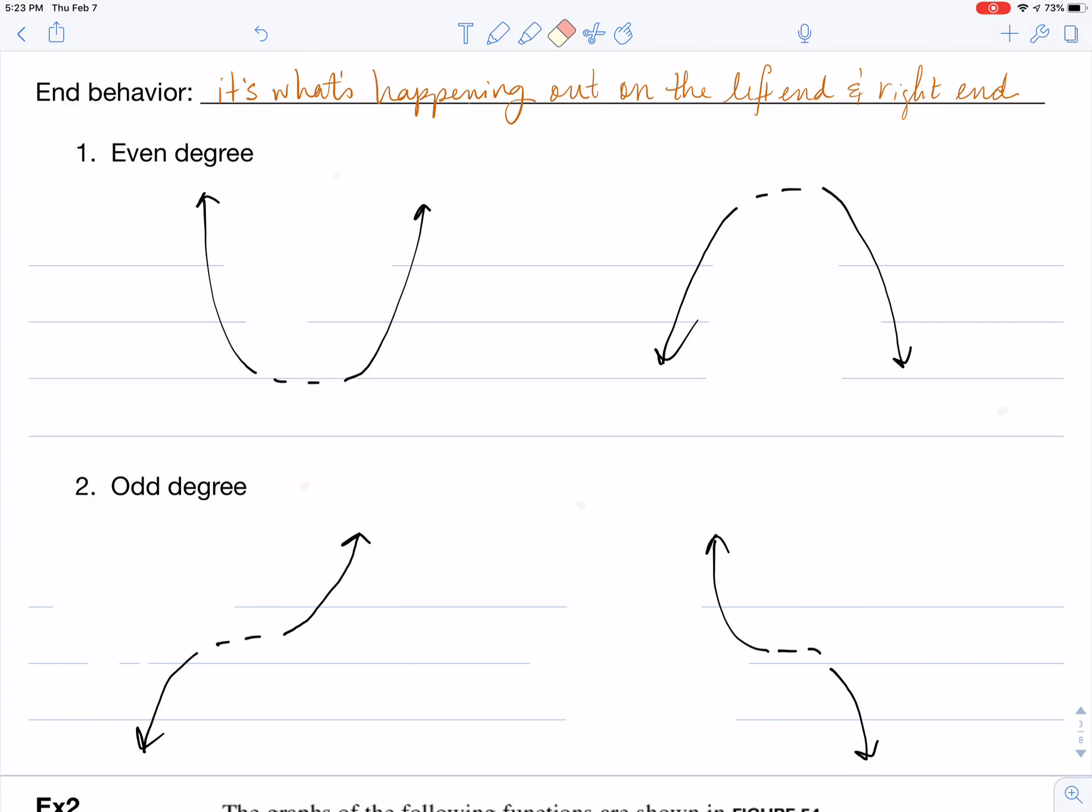Think back with me to quadratics from chapter 3 and how you knew that a parabola was going to be concave up or concave down. You knew that because of the negative out front, the negative leading coefficient.